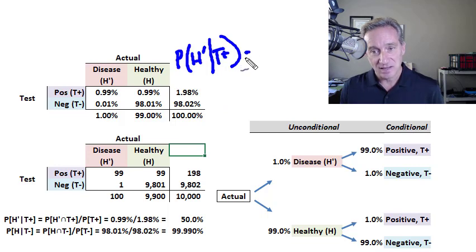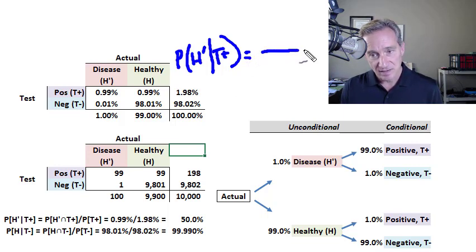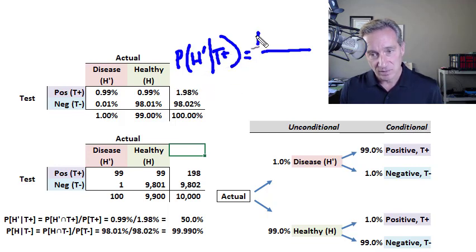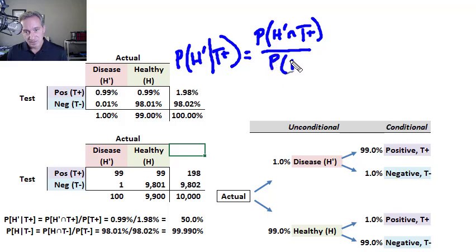Bayes Theorem applies a basic probability relationship: the conditional probability equals a joint probability divided by an unconditional probability. In this case, the joint probability is that both the patient has the disease and the test result is positive, divided by the unconditional probability that the test result is positive. Equivalently, we can rearrange: unconditional times conditional equals joint.